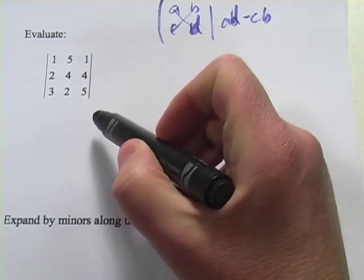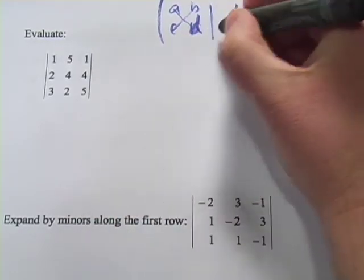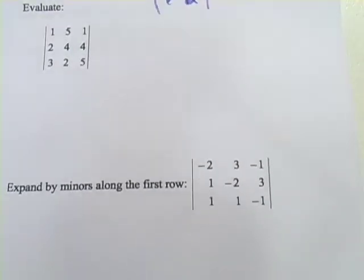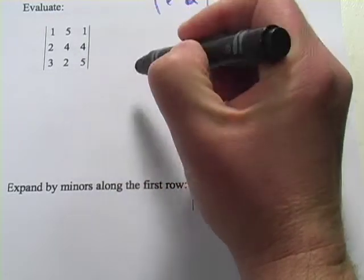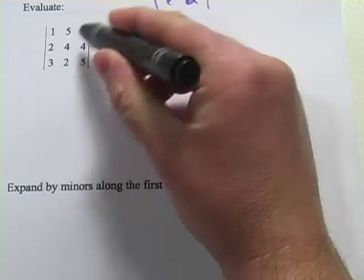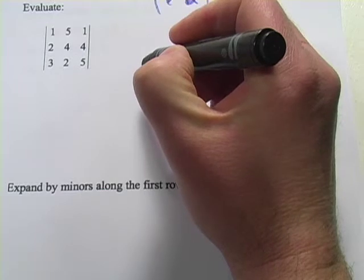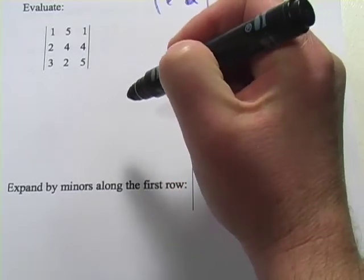Something similar happens with a 3 by 3, although it's a little more complicated. Let's take a look at that. We're going to have diagonals again, but there are going to be 3 down diagonals that we add together and 3 up diagonals that we subtract from that. And that's going to be our value for the determinant.